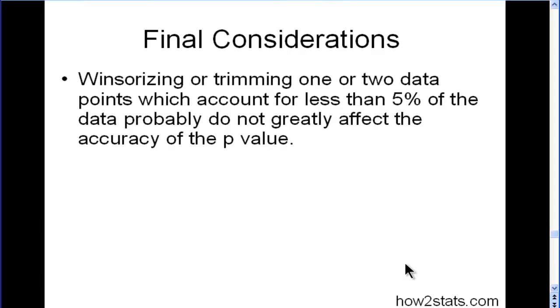Some considerations: Winsorizing or trimming one or two data points isn't a very big deal when it accounts for less than 5% of your total data. You can be confident that the p-value of the t-test or correlation analysis you're doing is going to be roughly accurate.